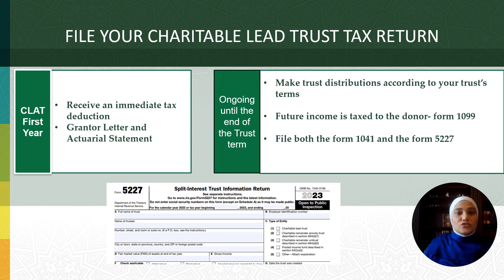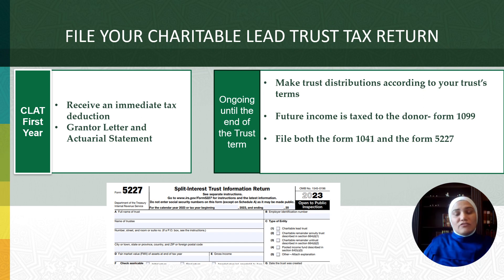CLATs are subject to many rules, including self-dealing rules — if you are not familiar with them, you could land in hot water. When you do it yourself, you need to be sure your charity is in good standing with the IRS and that you do not violate the rules. For example, a CLAT distribution cannot be made to your private foundation, but you can send your distribution to your donor-advised fund.